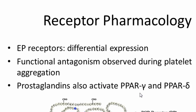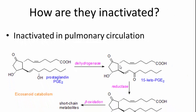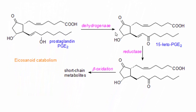These prostaglandins also activate PPAR-gamma and PPAR-delta, which are nuclear transcription factors. Once prostaglandins are formed, they are inactivated in pulmonary circulation — they must reach the lung smooth muscle cells for inactivation. The inactivation steps occur via a dehydrogenase enzyme, which transforms the hydroxyl group into a keto group (dehydrogenation), forming 15-keto PGE2. Then, through the beta-oxidation pathway, it leads to short-chain metabolites. This is the general prostanoid catabolism.